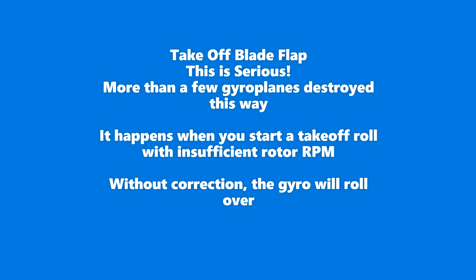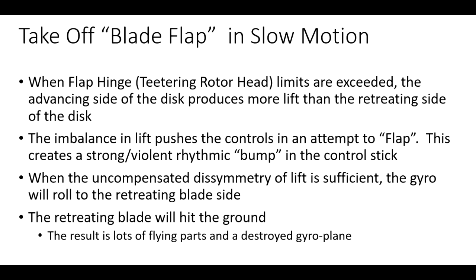More than a few gyroplane accidents have been caused by blade flap on a takeoff roll. Typically what happens is the pilot starts with insufficient rotor RPM and then accelerates the gyro. As the gyroplane accelerates, it experiences dissymmetry of lift. If the dissymmetry of lift exceeds the capabilities of the rotor head, blade flap is experienced. When the rotor head capabilities have been exceeded, the advancing side of the rotor disc has more lift and pushes against the controls — felt as strong bumping. Left uncompensated, the gyro will roll towards the retreating side of the disc with the rotor striking the ground.